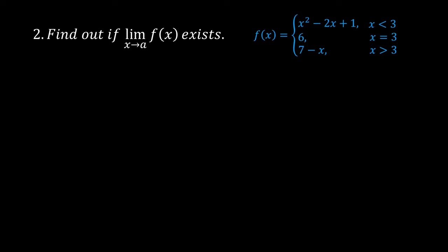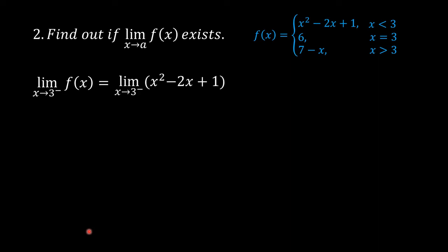Second step: find out if the limit of f of x as x approaches a exists. We are going to find out if the limit of f of x as x approaches 3 exists. Solve for the limit of f of x as x approaches 3 from the left, and then solve for the limit of f of x as x approaches 3 from the right. The left-hand limit equals the limit of x squared minus 2x plus 1 as x approaches 3 from the left, because x is less than 3.